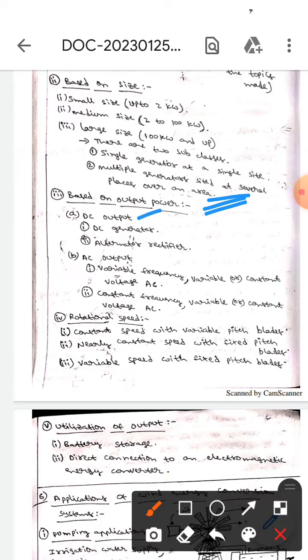If it is DC output, there are two types: DC generator and alternator rectifier. In AC output, there is variable frequency variable or constant voltage AC, or constant frequency variable or constant voltage AC.